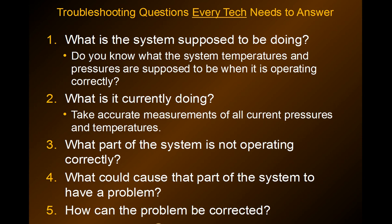Which part of the system is not operating correctly — the condensing side, the evaporating side, or the defrost side? Also, what could cause that part of the system to fail or have a problem? And how can that problem be corrected? Pretty simple. But the key is knowing what the system is supposed to be doing — that is critical.